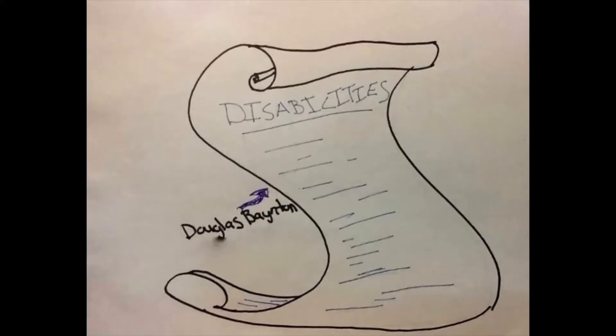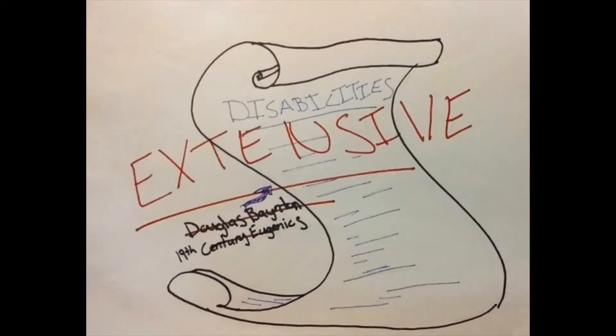Douglas Bainton outlined the list of disabilities that was used in the 19th century to eugenically filter immigrants. Let me tell you, this list is extensive.